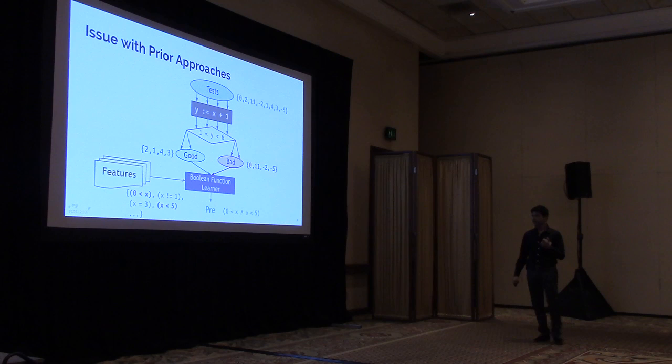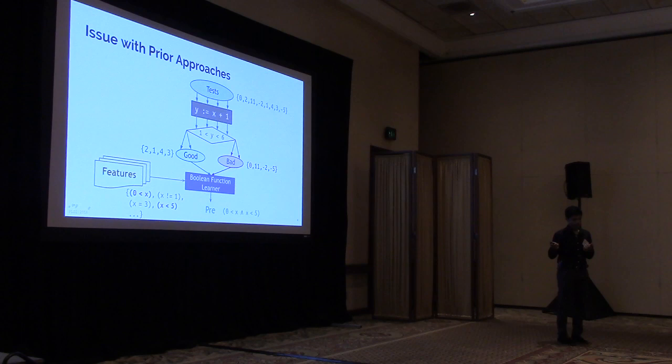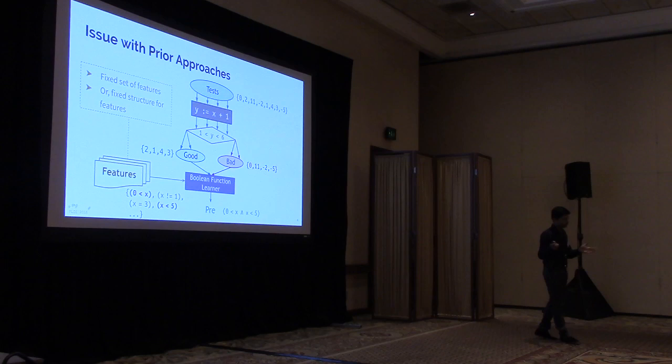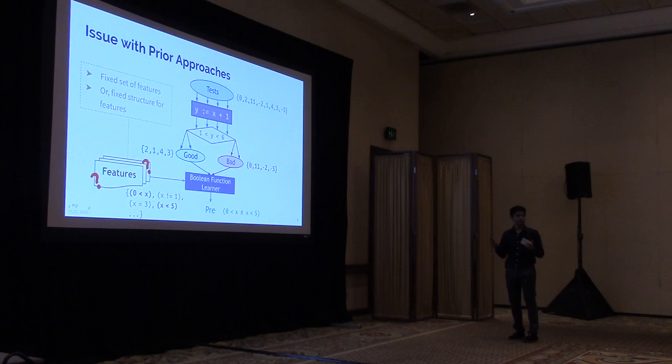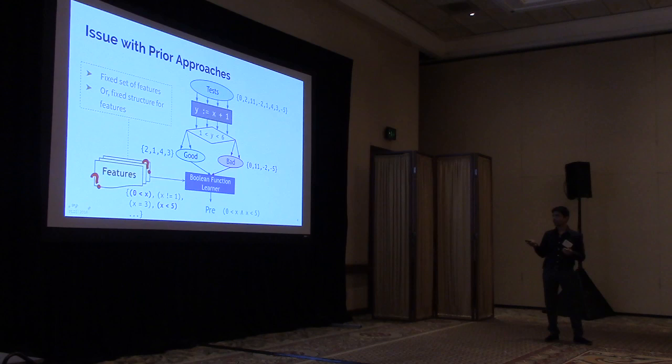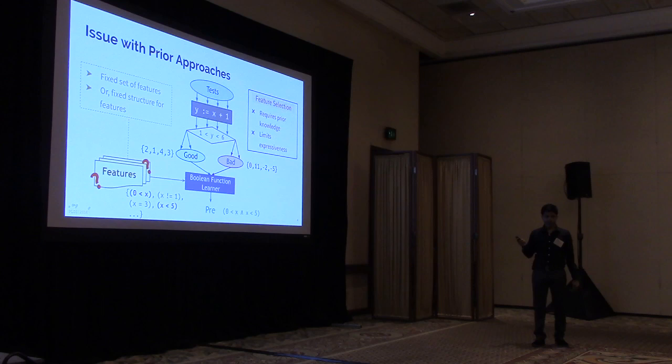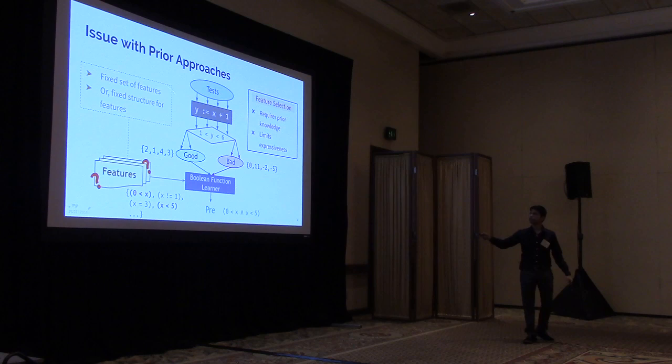Prior works assumed either a fixed set of features or a fixed structure for features, like 'something op something.' But how do we know what features will be useful for the learner? This is a hard problem — there is no easy way to guess this useful set of features. The user would need some idea about the code to know what features are useful. Furthermore, having a fixed set of features limits the expressiveness of the learner: it cannot learn anything beyond that set.